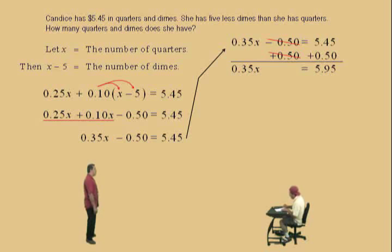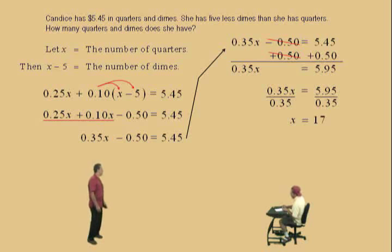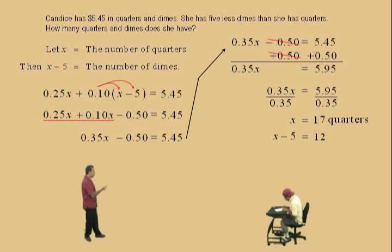Now, what do we do to solve for x? Remember, we want 1x. Divide both sides by 0.35. Very nice there. And, we get that 1x equals what, Charlie? 17? Very good. That's some good calculator work. So, if x equals 17, remember, x minus 5 is what, Charlie? 12. X represents the number of quarters, and x subtract 5 equals the number of dimes, right? So, there we have it, 17 quarters and 12 dimes.